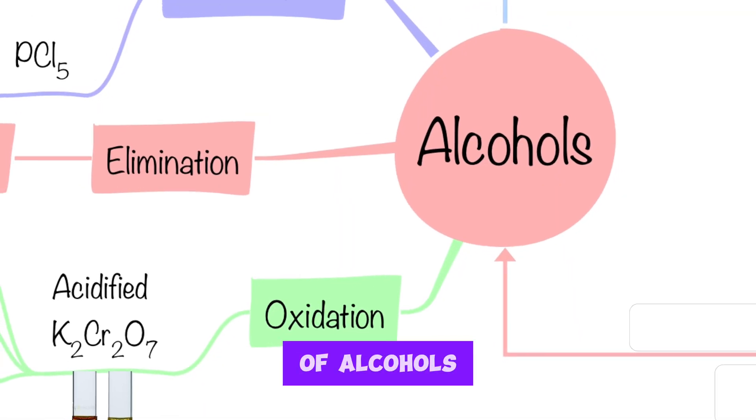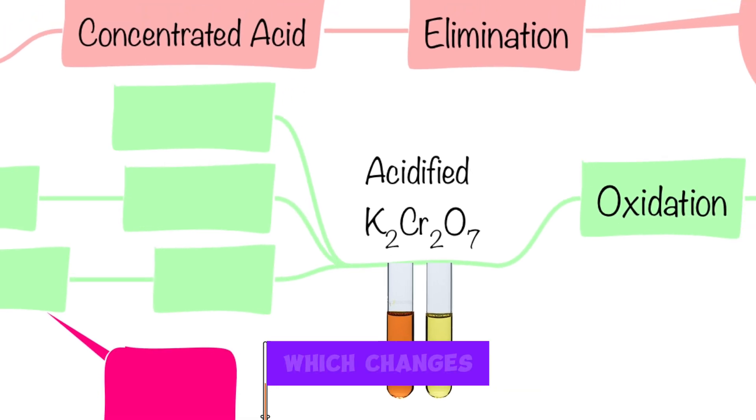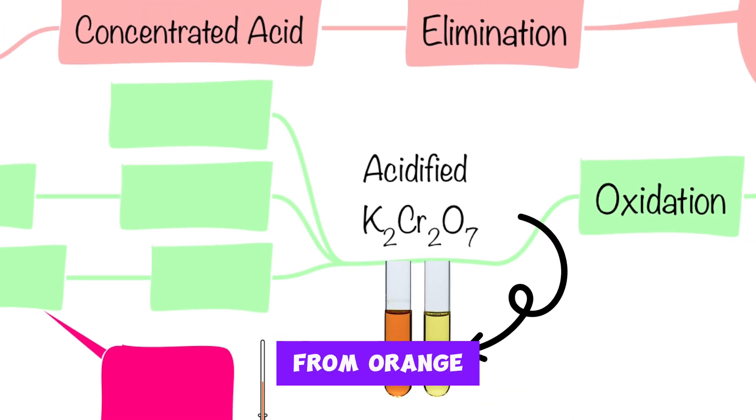The oxidation of alcohols is done by using acidified potassium dichromate which changes its color from orange to green.